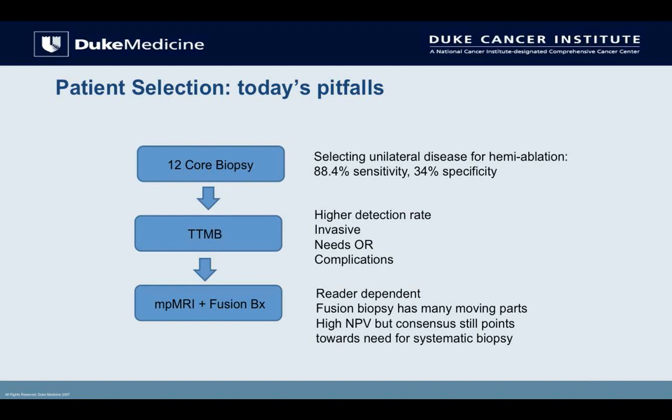The 12-core biopsy used to be used to detect unilateral disease for hemiablation. The problem was the specificity was only 34%. This progressed to the transperineal template mapping biopsy, which has a great detection rate but is invasive and requires an operating room. Today, this is progressing again to MRI and fusion biopsy. But it's reader dependent, fusion has many moving parts, it has a high negative predictive value, and most people feel you still need some systematic biopsies in addition.